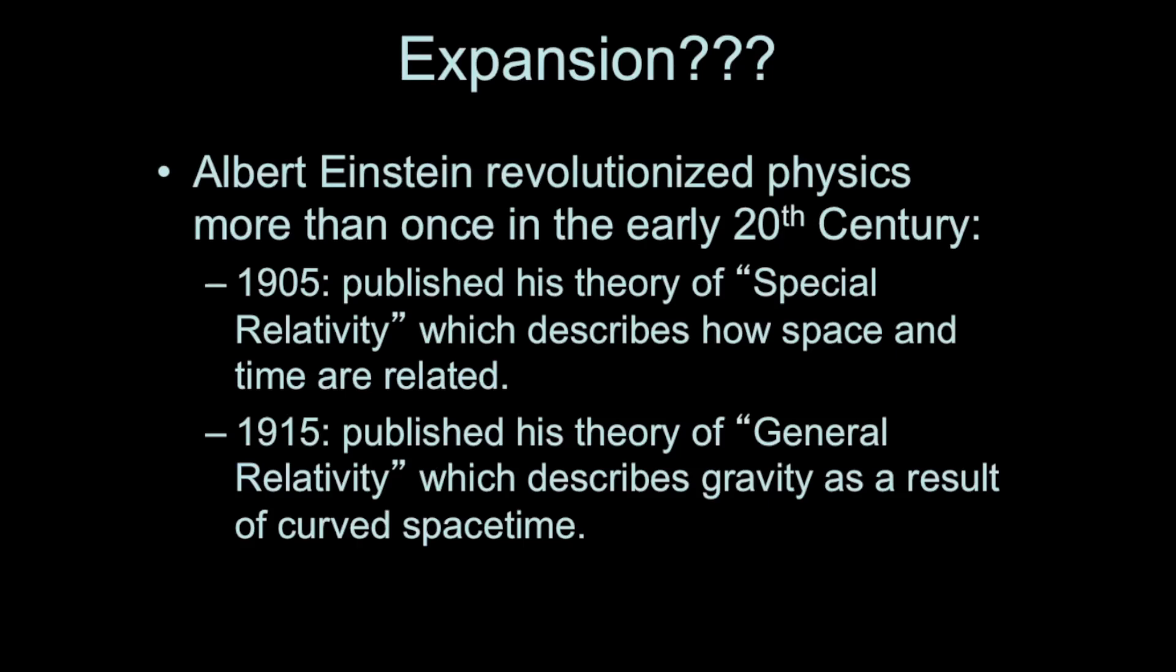This goes back to Einstein. Einstein was a physicist that revolutionized the field of physics multiple times in the 20th century. Not only did he lay the groundwork for some of our understanding of quantum mechanics, but he also developed two theories of relativity about ten years apart. In 1905 he developed the equations of special relativity, and that describes how objects that move very fast, how they behave. And it also describes how space and time are related, that your motion through space affects your motion through time. And so those two things are interrelated. And we often now describe something called space-time.